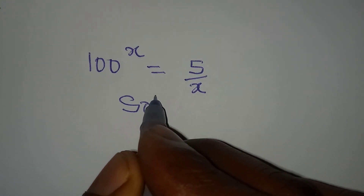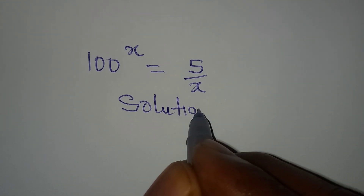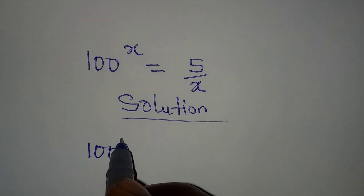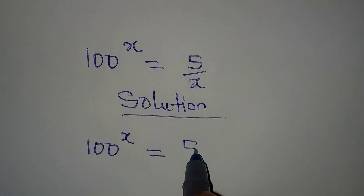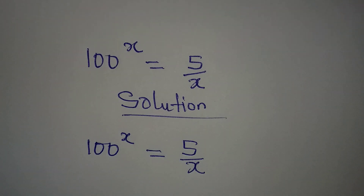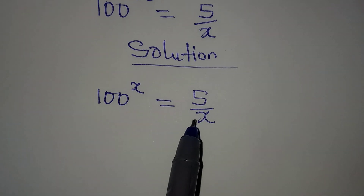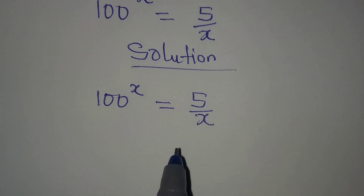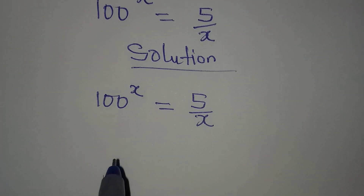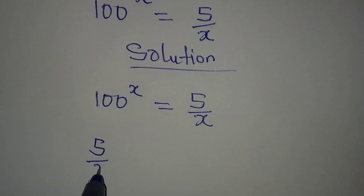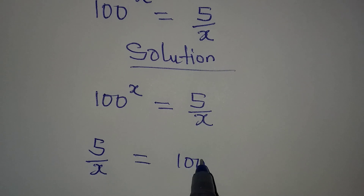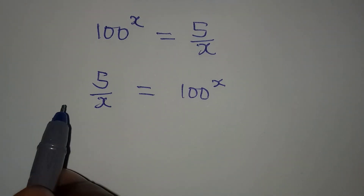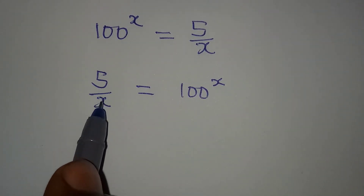Let's provide the solution to this Olympiad problem: 100 to the power of x equals 5 over x, and we are trying to find the value of x. First, I'd like to change the position so we have 5 over x being equal to 100 to the power of x. The second step is raising both sides to the power of 5 over x.